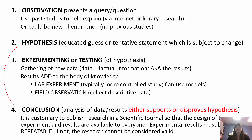The next step is your experiment or testing of your hypothesis. You're going to gather new data, which is factual information, and these are your results. You're going to add to the body of knowledge with your results. You can either do a lab experiment, which is usually very controlled and can use models, or a field observation where you collect descriptive data in the natural setting.